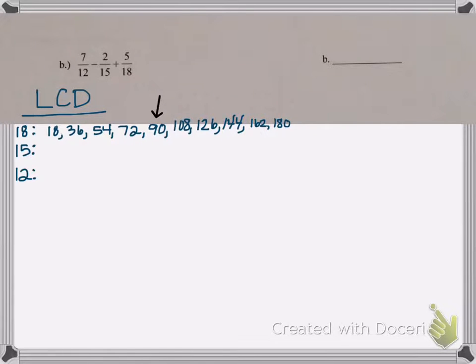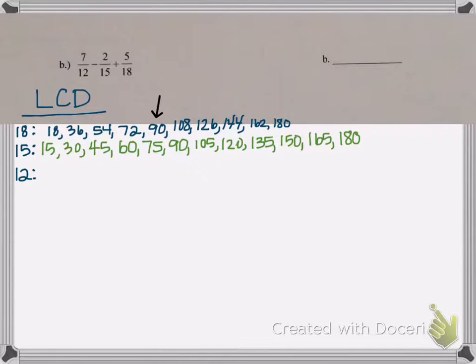Okay, I see 180 is in my list. Let's check the list of 15 and see if 180 falls in that list. Yep, 180 falls in the list of the multiples of 15. Now notice 90 is also in the list, but remember it has to be a multiple of all three numbers, and 90 will not be in the list of multiples for 12. Let's check 12 and make sure 180 is in the list of multiples of 12.